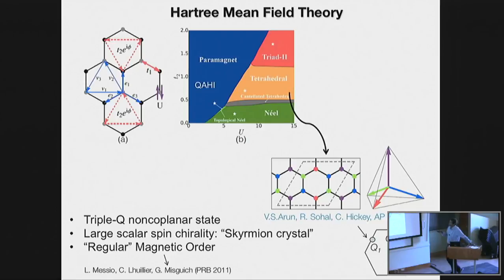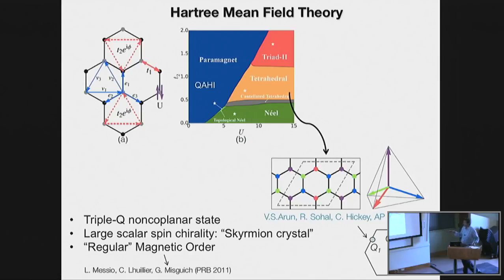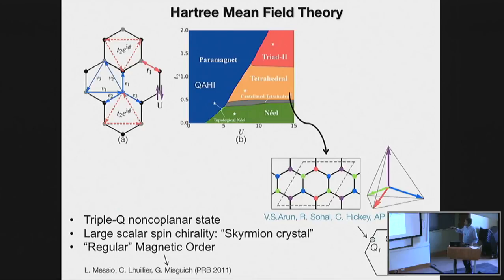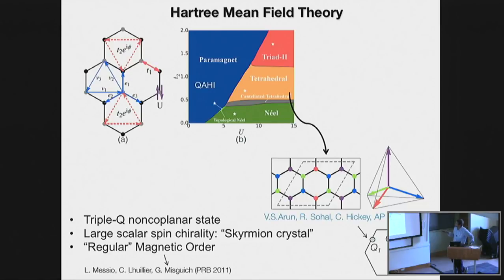We started by doing simple Hartree mean field theory — just taking this Hubbard model and decoupling the interactions in the mean field limit. This shows the phase diagram when we vary T2, the strength of the second-neighbor hopping, and the interaction strength U. When interactions are small, these bands are all well separated, so nothing happens — this just realizes the quantum Hall insulator. Once we get to larger U the bands overlap in energy and we get a metallic system. For large interactions and negligible T2, this reduces to the usual Heisenberg model on the honeycomb lattice, recovering Néel order — a commensurate spin density wave.